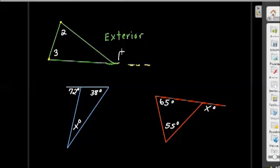And then from it, the two angles inside the triangle that are farthest from it are called the remote interior. Okay, so I'll just label those over here remote, like far away, and interior as in inside.